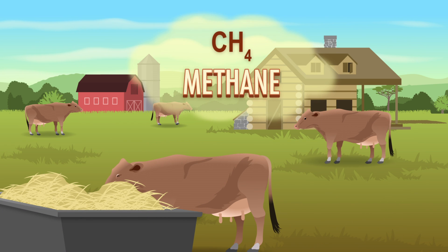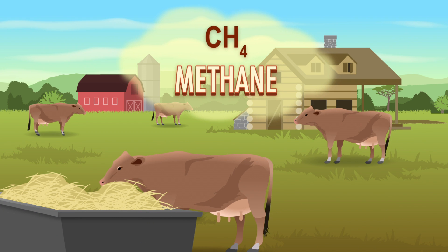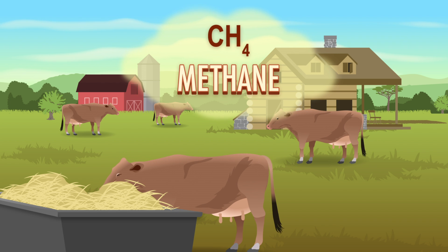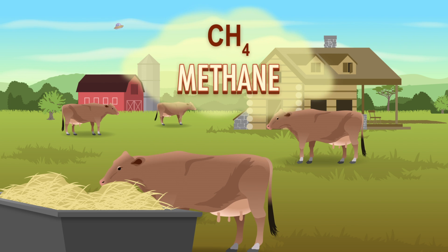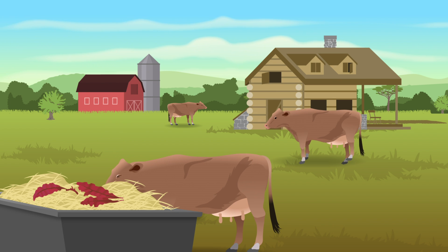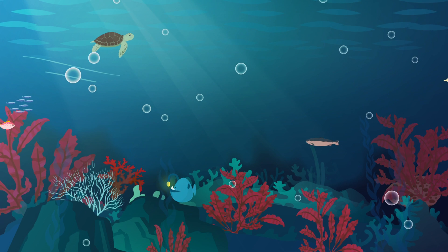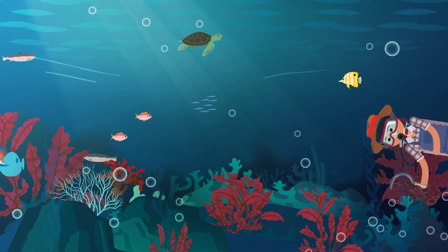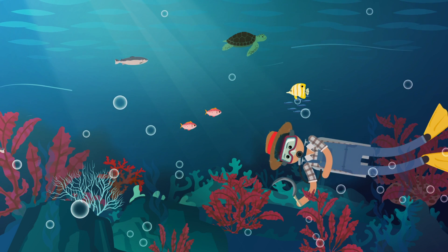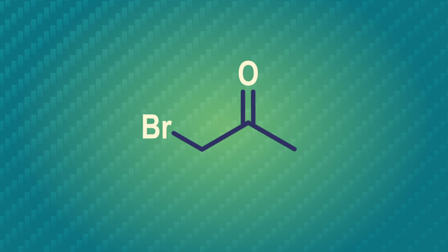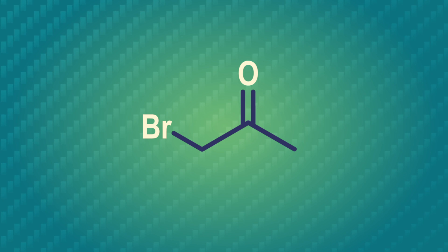Cows produce methane, and that's a concern because of global heating. But their diet really affects how much methane they burp out. In 2014, researchers showed that feeding them a diet containing 1-2% red seaweed reduced their methane emissions by over 90%. The problem with this exciting research is that there's not enough wild seaweed to feed all the cows, and this seaweed hasn't been commercially farmed yet. But people are working on it! In the meantime, to better understand red seaweed, chemists have been looking closely at its chemical makeup.